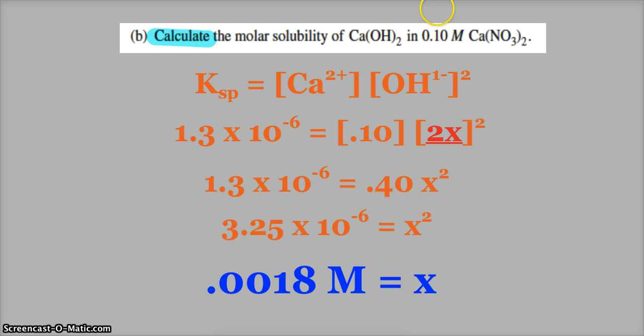If there had not been calcium nitrate, if they had just said calculate the molar solubility of calcium hydroxide, then I would have called this x. That would have been 2x, so this would have ended up being 4x cubed. And then I would have solved for x, and that would have just been my regular molar solubility.